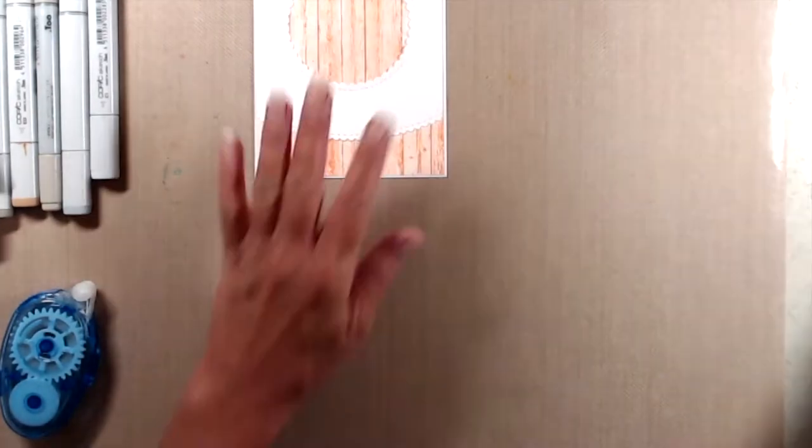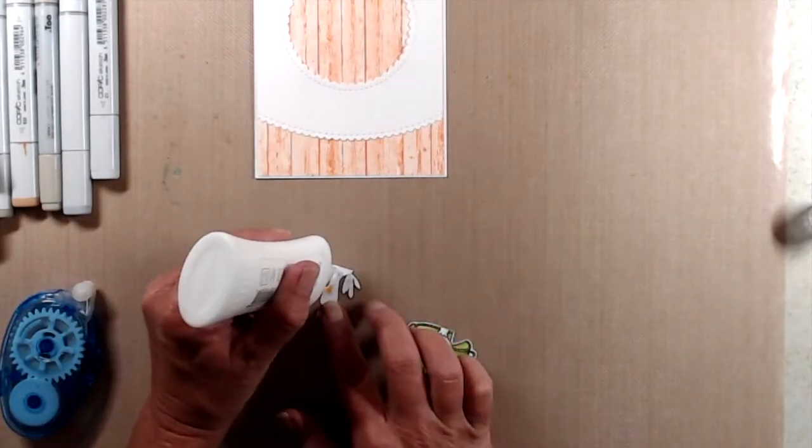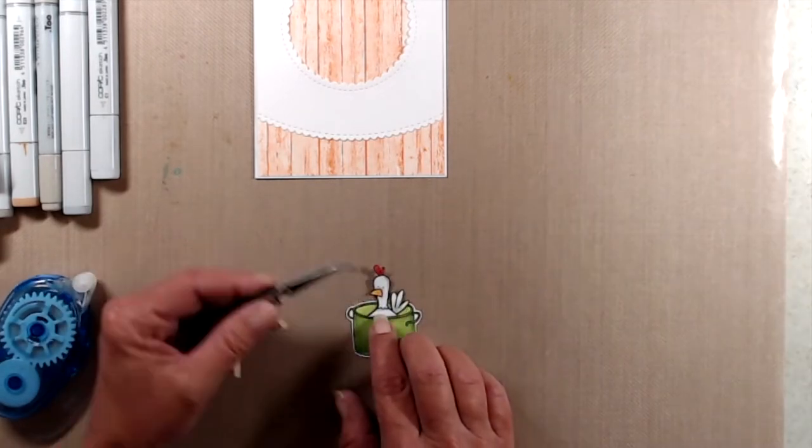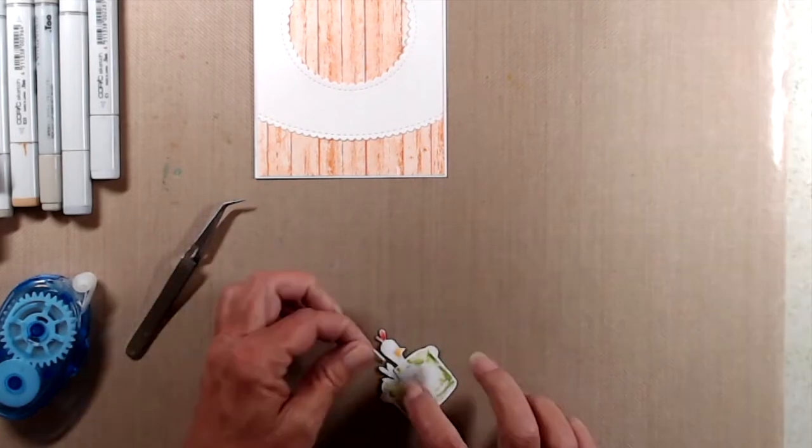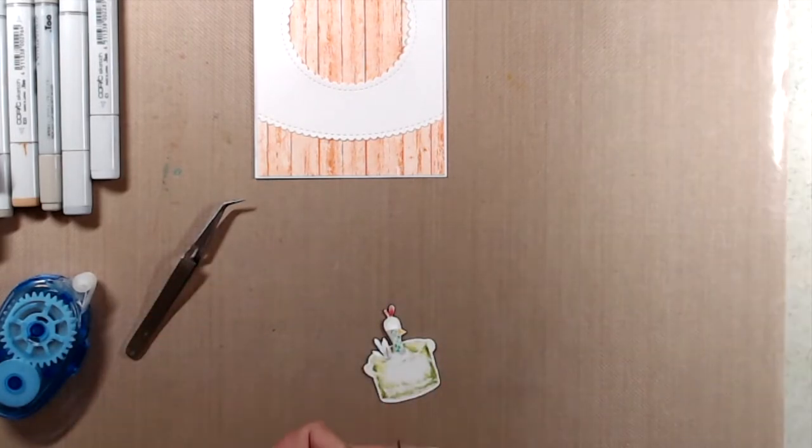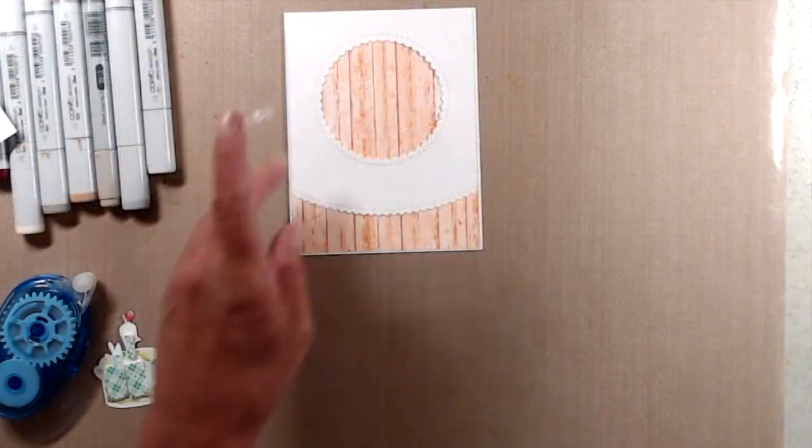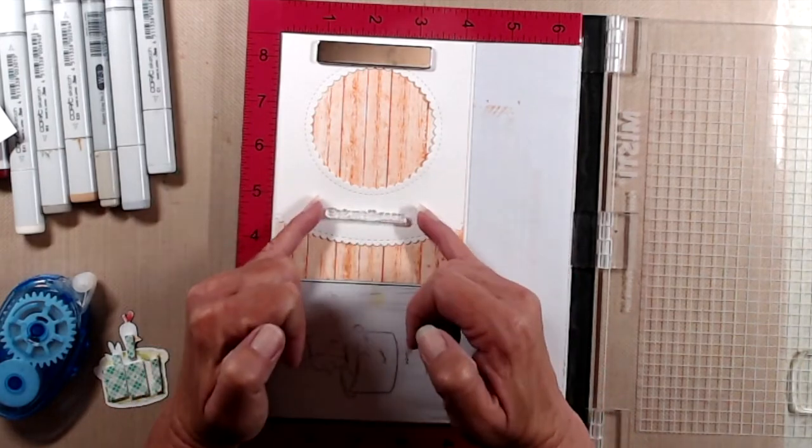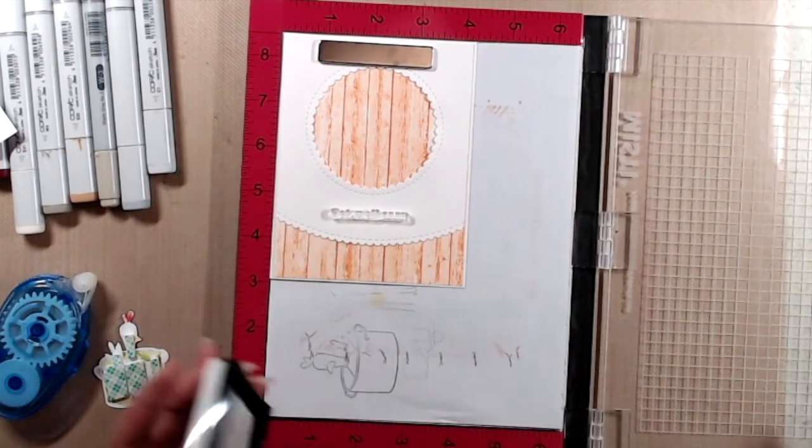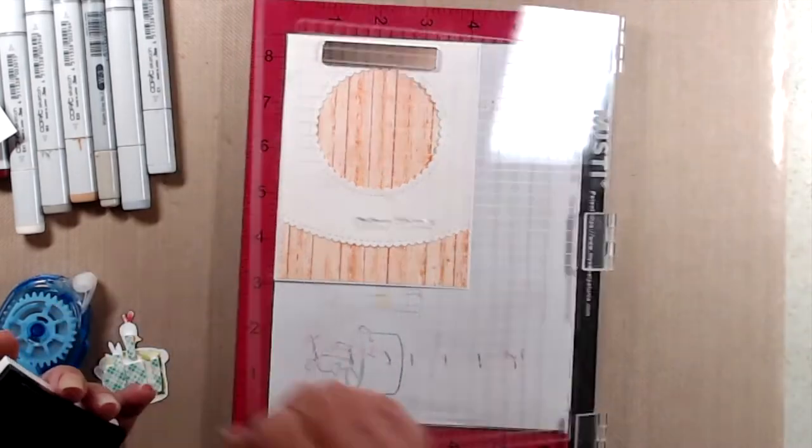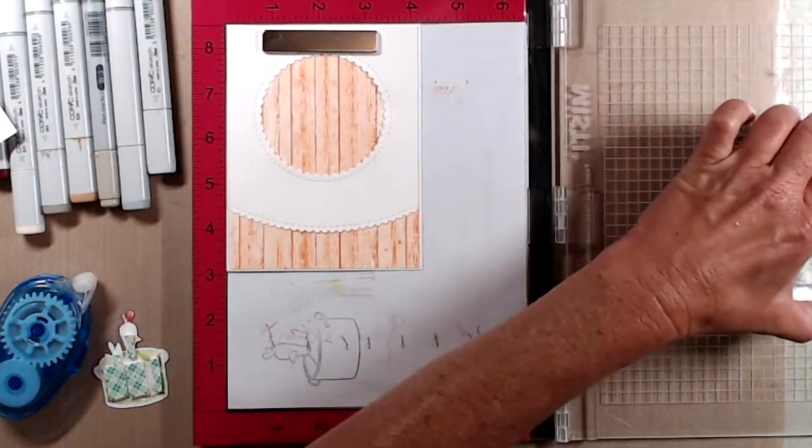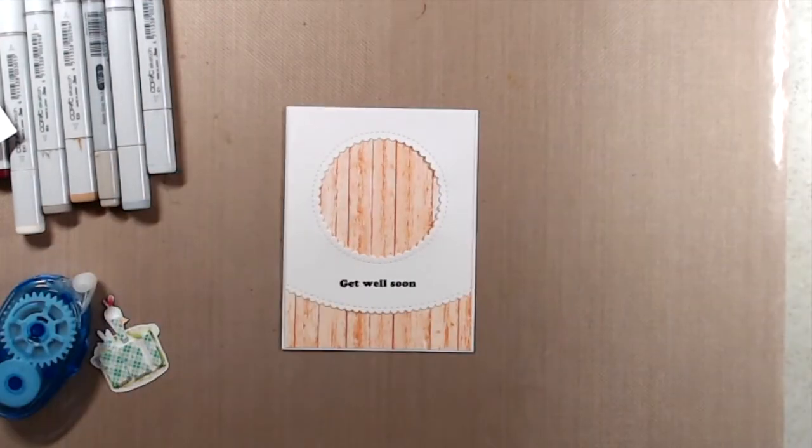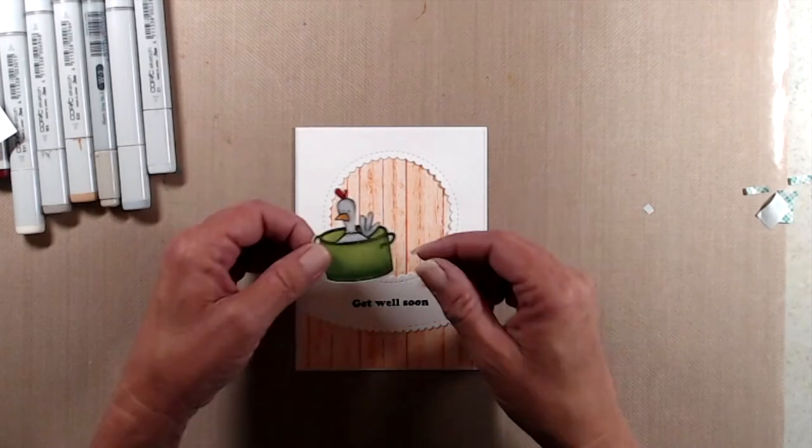Next I used a tiny little bit of liquid glue to put my chicken in a stock pot back together and then I added a bunch of foam tape on the back of the chicken. I set that aside before putting it on the front because I thought it might be a good idea to stamp my sentiment before I did that. So I put my card base in my Misti and lined up the sentiment get well soon. I inked that up with VersaFine onyx black ink and stamped that down. Once I had done that then I removed the release paper from the back of my chicken and set him into place.